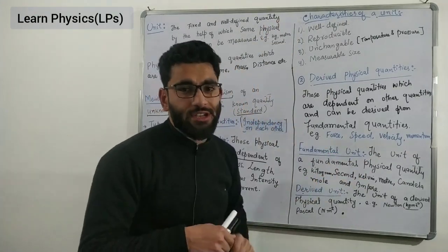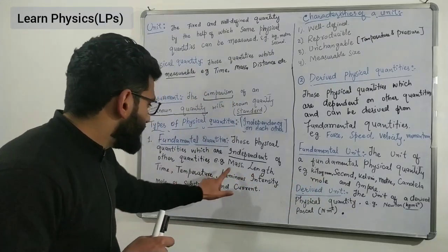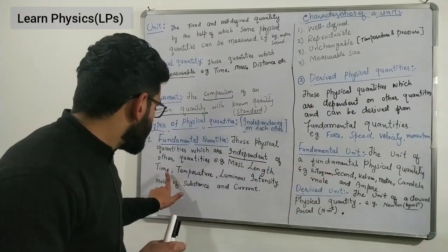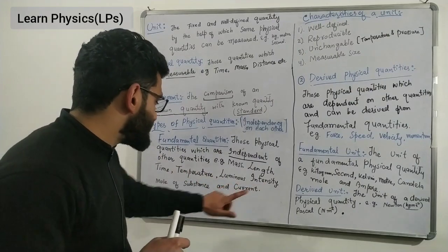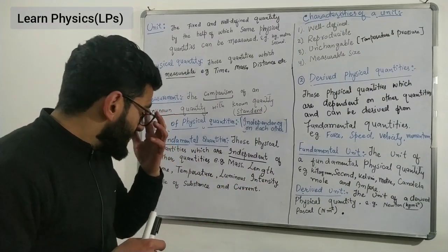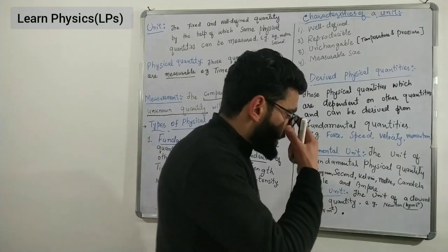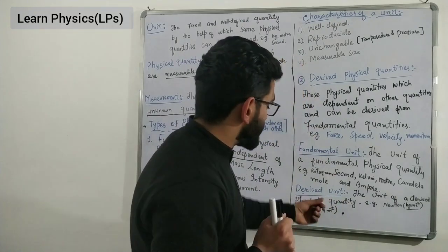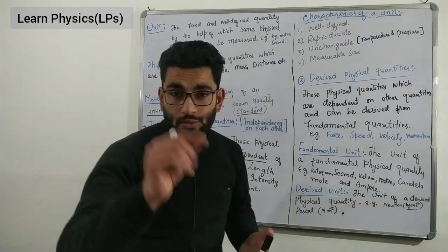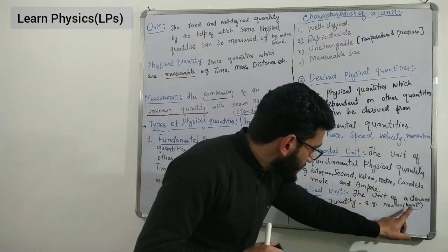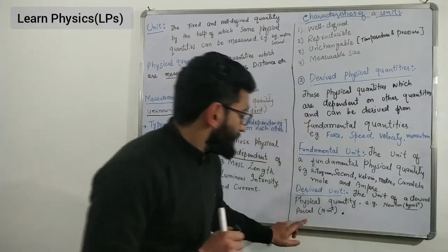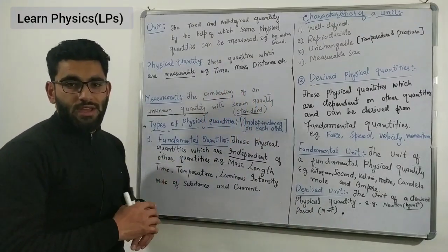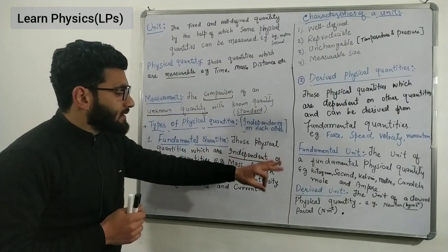The fundamental unit of mass is the kilogram, length is the meter, time is the second, temperature is the kelvin, luminous intensity is the candela, mole of substance is the mole, and current is the ampere. For derived units — for example, force has the unit newton, where one newton equals one kilogram meter per second squared. Pressure has the unit pascal, which equals newton per meter squared, meaning force per unit area. This was all for today's lecture; next time we will discuss the system of units.